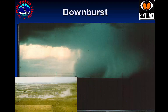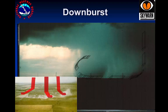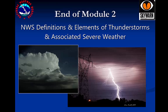Thunderstorms can produce strong winds that drop down and spread out as they strike the ground. Wind speeds with downbursts can exceed 100 miles per hour and do damage similar to that of a tornado. The damage from a downburst spreads outward as the winds strike the ground — these are considered straight-line winds, as opposed to the swirling, converging winds of a tornado. This ends Module 2: National Weather Service definitions and elements of thunderstorms and associated severe weather.